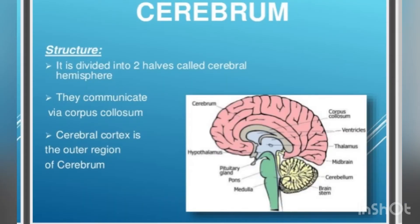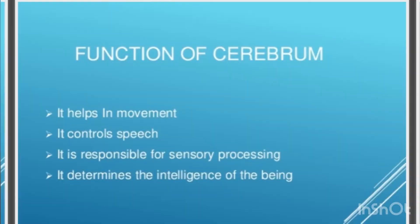Cerebrum structure: it is divided into two halves, so-called the cerebral hemispheres. Function of the cerebrum: it helps in movement, it controls speech, and it is responsible for sensory processing.